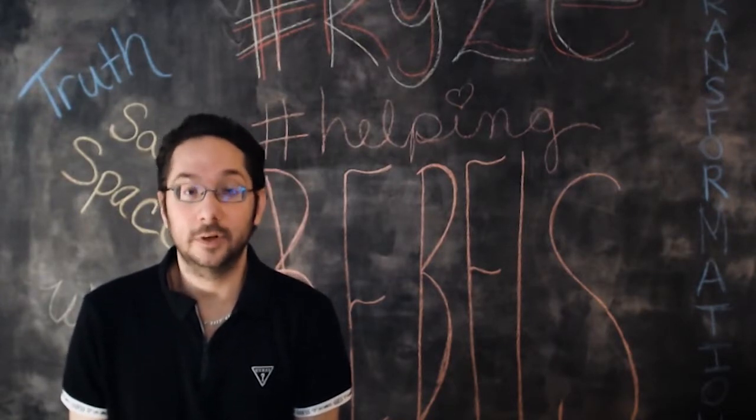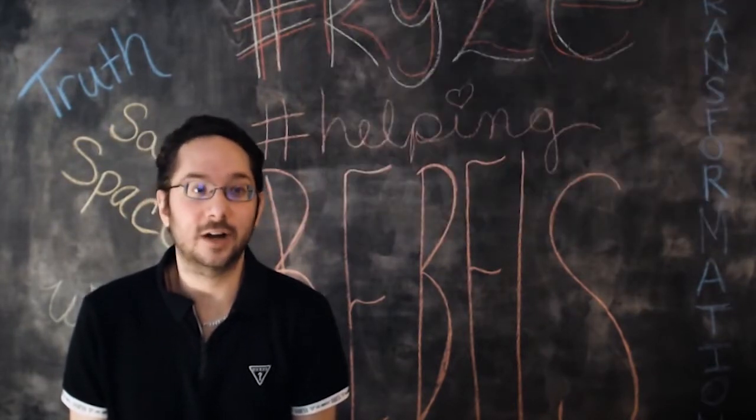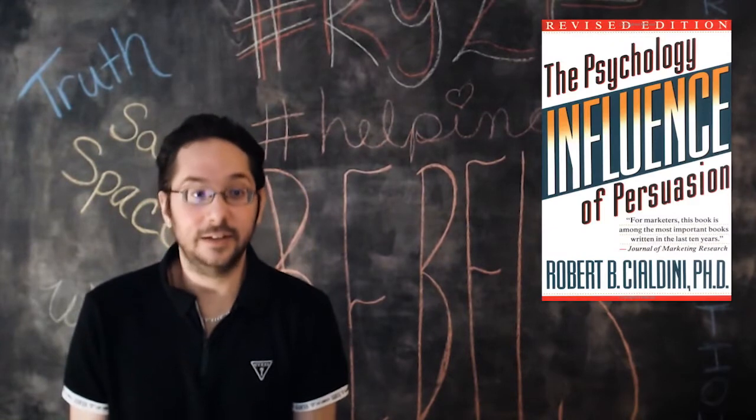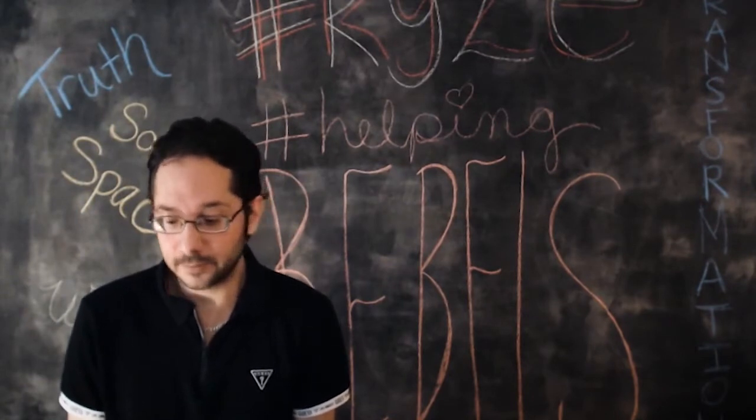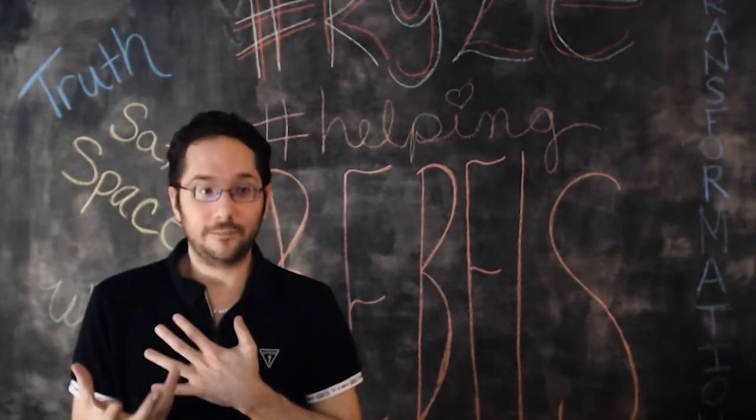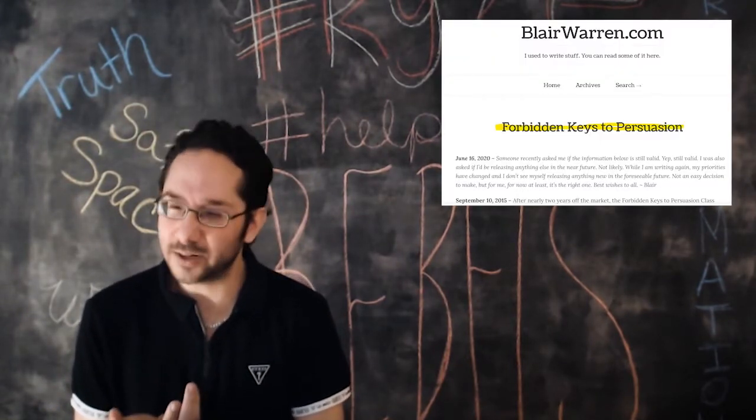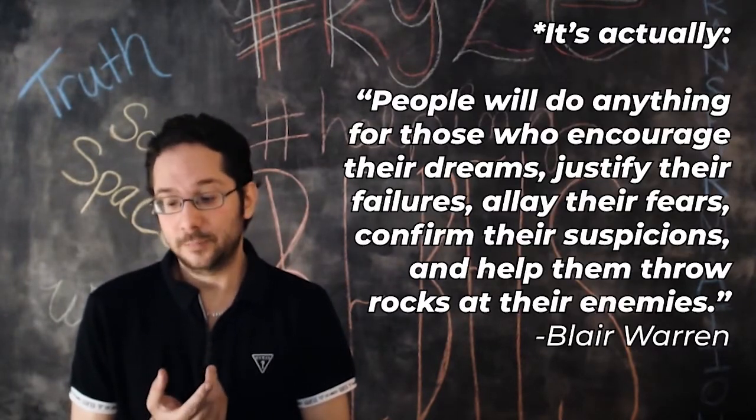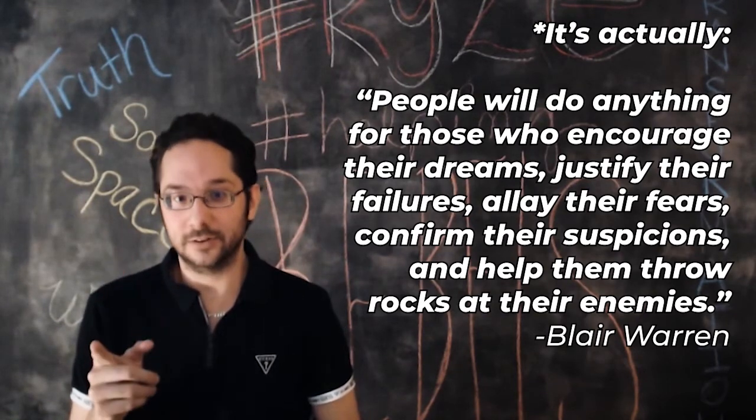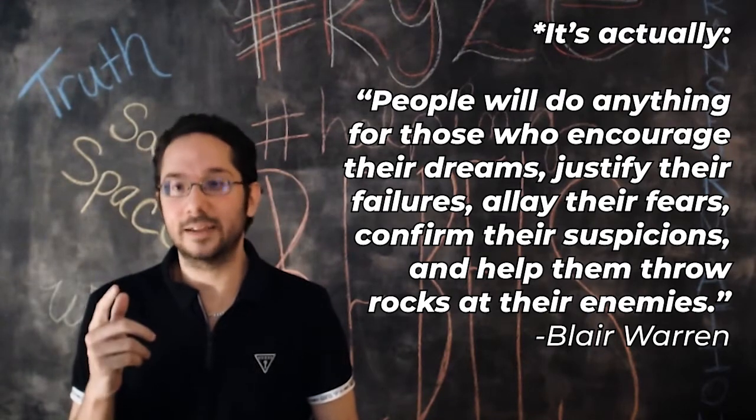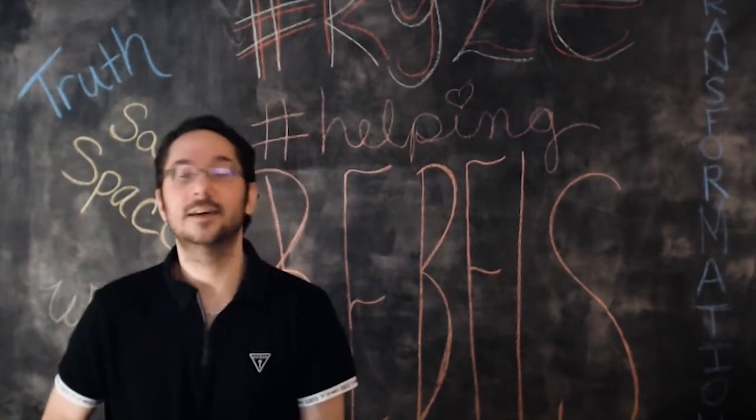There are a ton of books on this. There's that FBI negotiator guy, Chris Voss, Never Split the Difference. There's Robert Cialdini, his book Influence. There's Kevin Hogan. Even Napoleon Hill touches on this. But I think the most powerful and simplest introduction to persuasion is Blair Warren's One Sentence Persuasion Secret. And the sentence is, people will do anything you want if you...